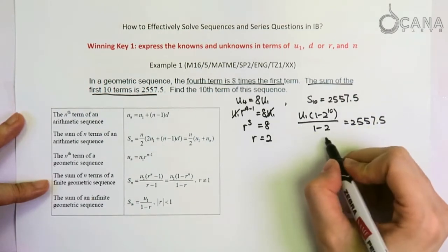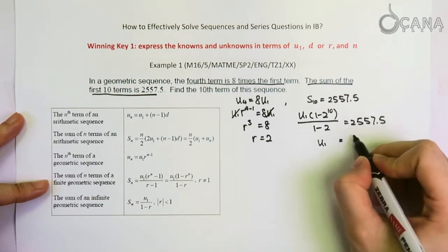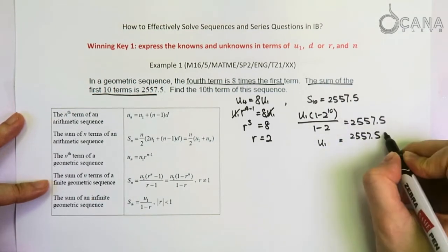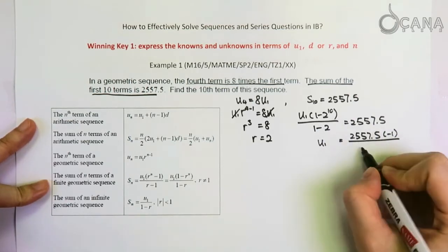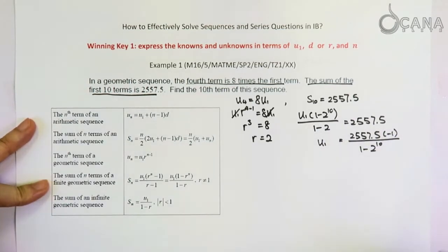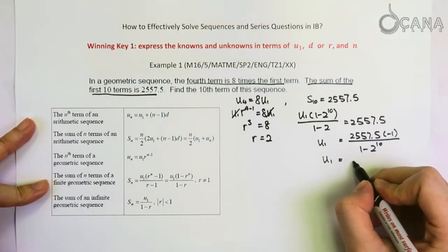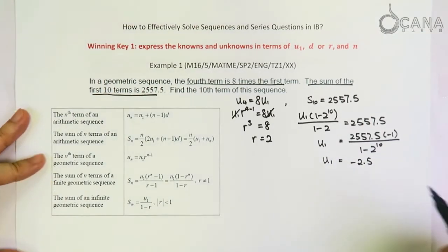With some rearranging, we get that U1 equals to this. So if we plug this into the calculator, we get that U1 equals to negative 2.5.